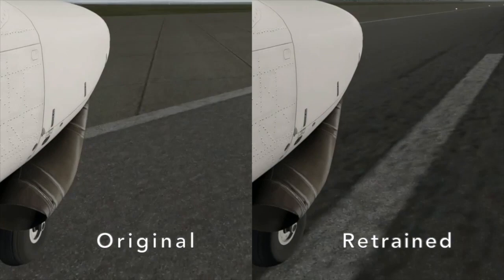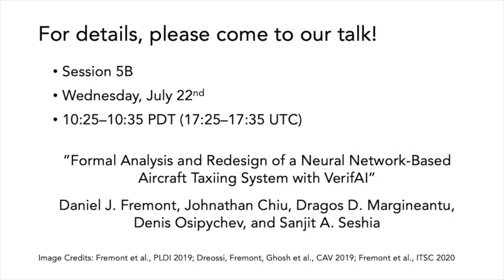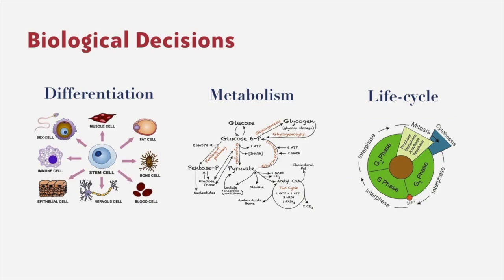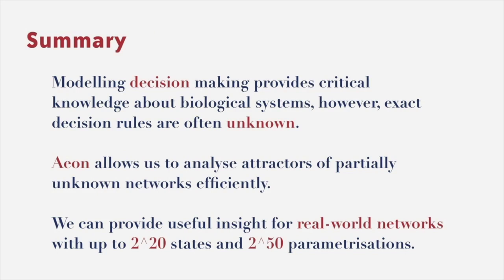Welcome to the talk about Aeon, a tool for attractor analysis of parameterized Boolean networks. A big part of biology is about making decisions — every split second, your cells decide what structures they should grow, what substances they should produce, and when they should reproduce or die. In biology, modeling decision-making is critical to understand cell behavior. However, it is often impossible to know the exact logical rules. With Aeon, we can design parameterized Boolean networks based on high-level knowledge about the system and symbolically analyze their long-term behavior, examining attractors of real partially unknown biological networks with millions of states and up to 2^50 possible parameterizations.